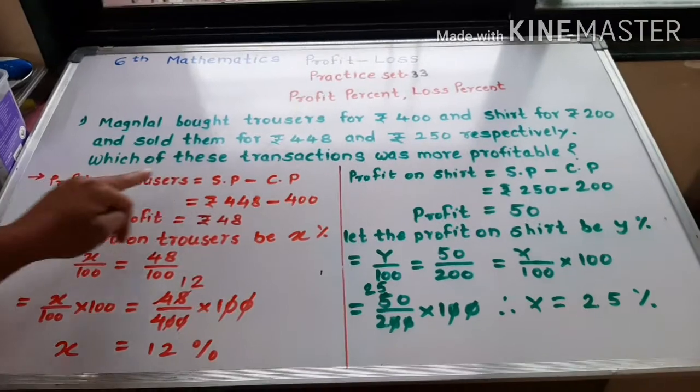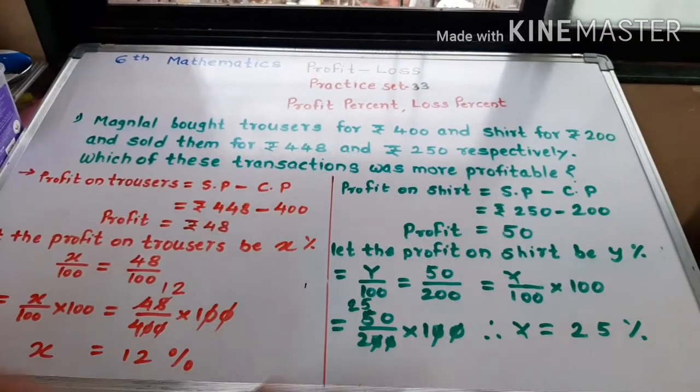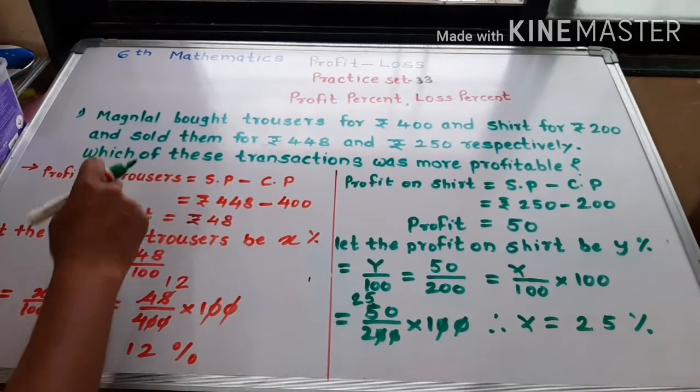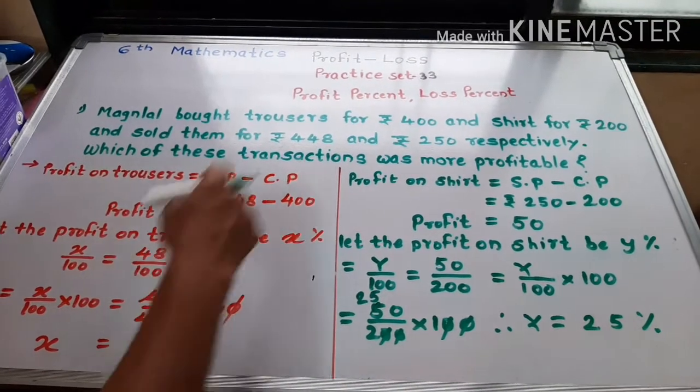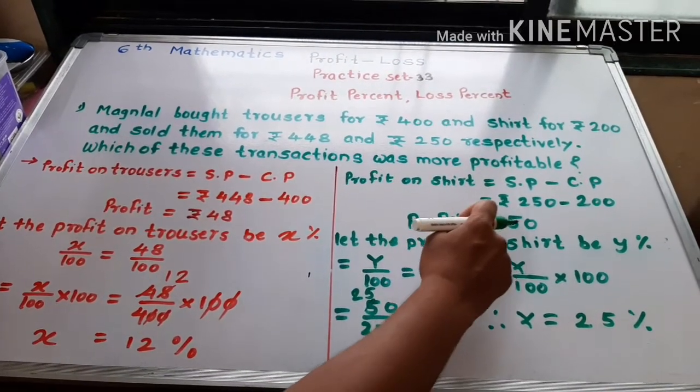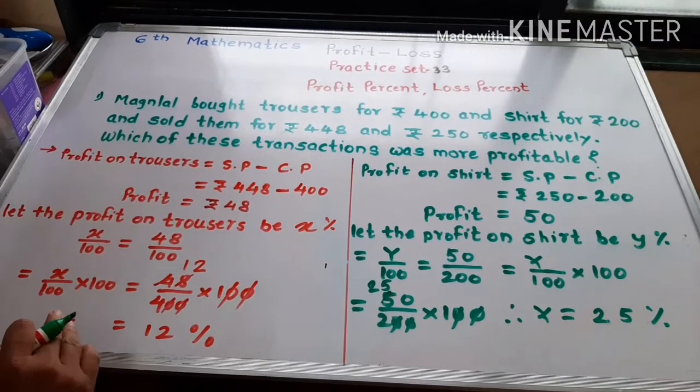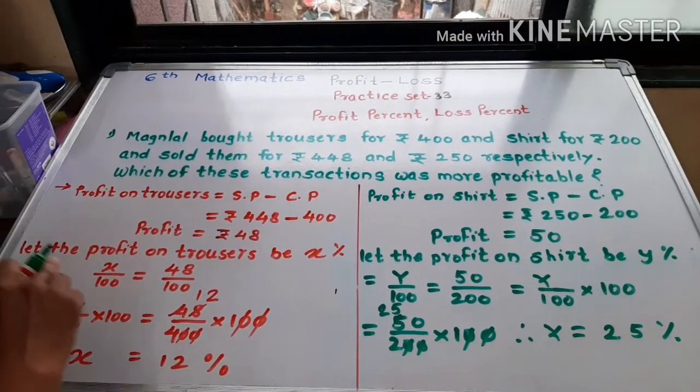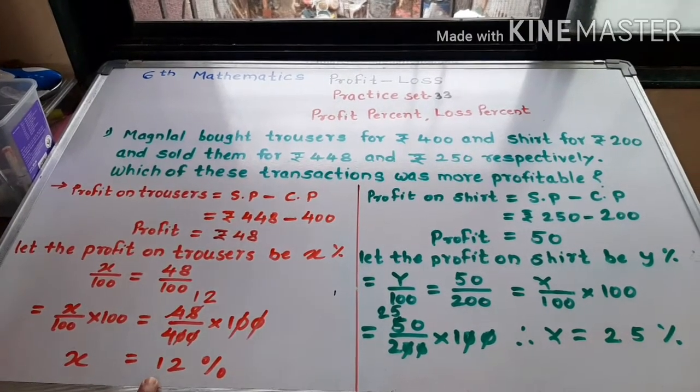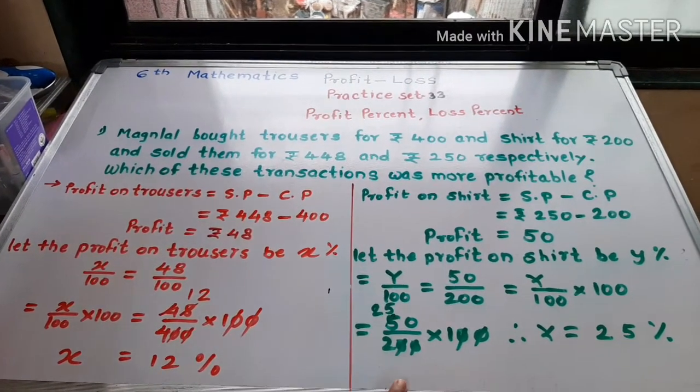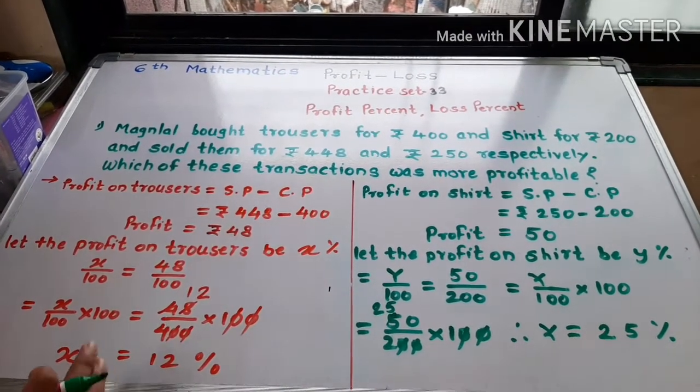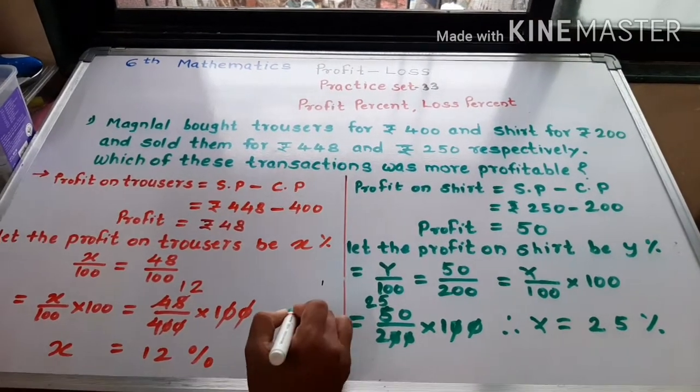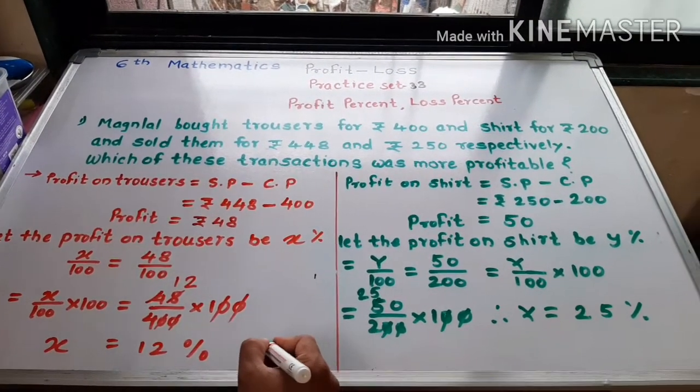We find the profit on trousers and profit on shirt. The profit on trousers is Rs. 48, profit on shirt is Rs. 50. In converting to percentage, the profit on trousers is 12% and profit on shirt is 25%.